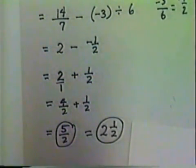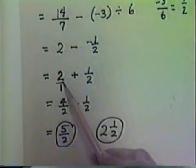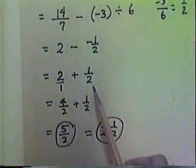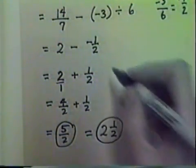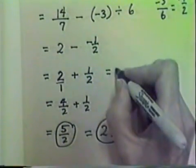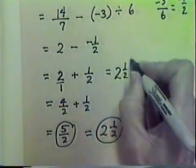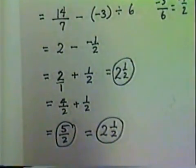So 5 halves is our answer. If you prefer mixed number form, you can change to 2 and 1 half. In fact, in this problem, there is a bit of a shortcut that we could use if we choose to. When we got 2 plus 1 half, we could say, oh yes, that's a whole number and a proper fraction. And so we could immediately write 2 and 1 half as our answer if we choose to.